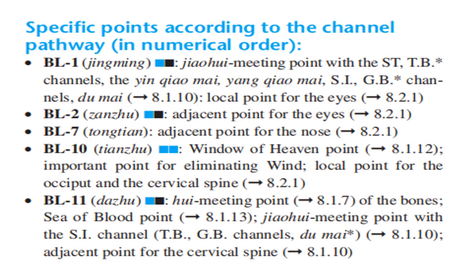Bladder 10 is also the local point for the occiput and cervical spine. Bladder 11 is the Wei Meeting Point of the Bones, the Hui Meeting Point of Blood, and the Jiao Wei Meeting Point with the Small Intestine Channel, Triple Burner, and Gallbladder Channel. It is an adjacent point for the cervical spine.